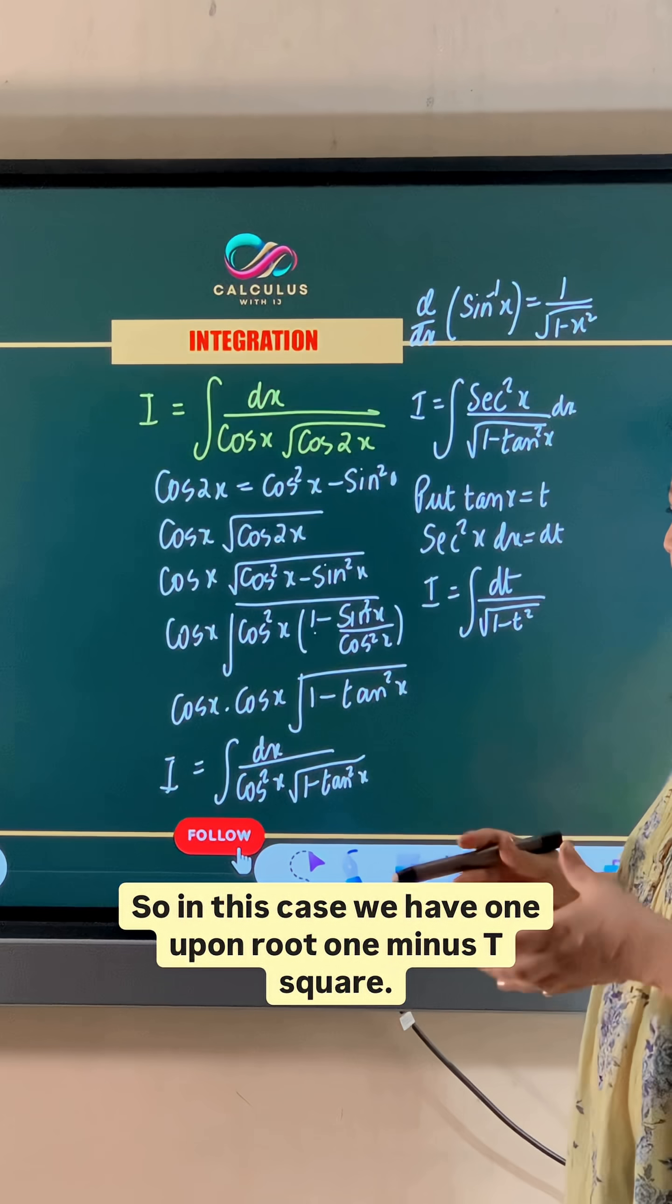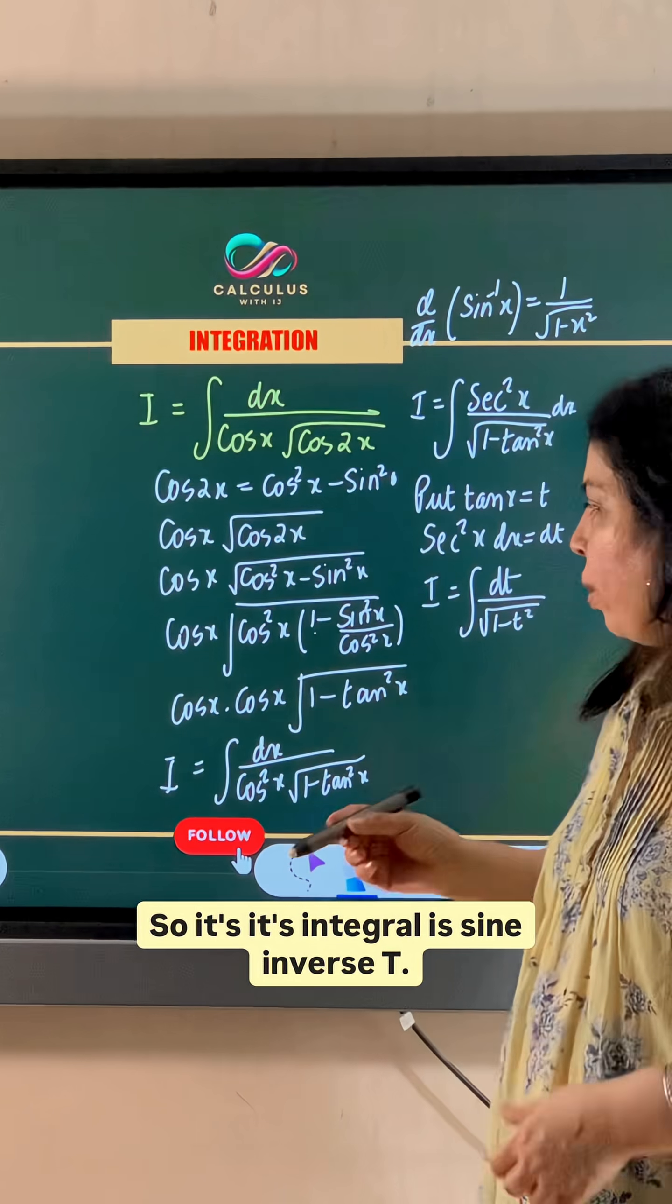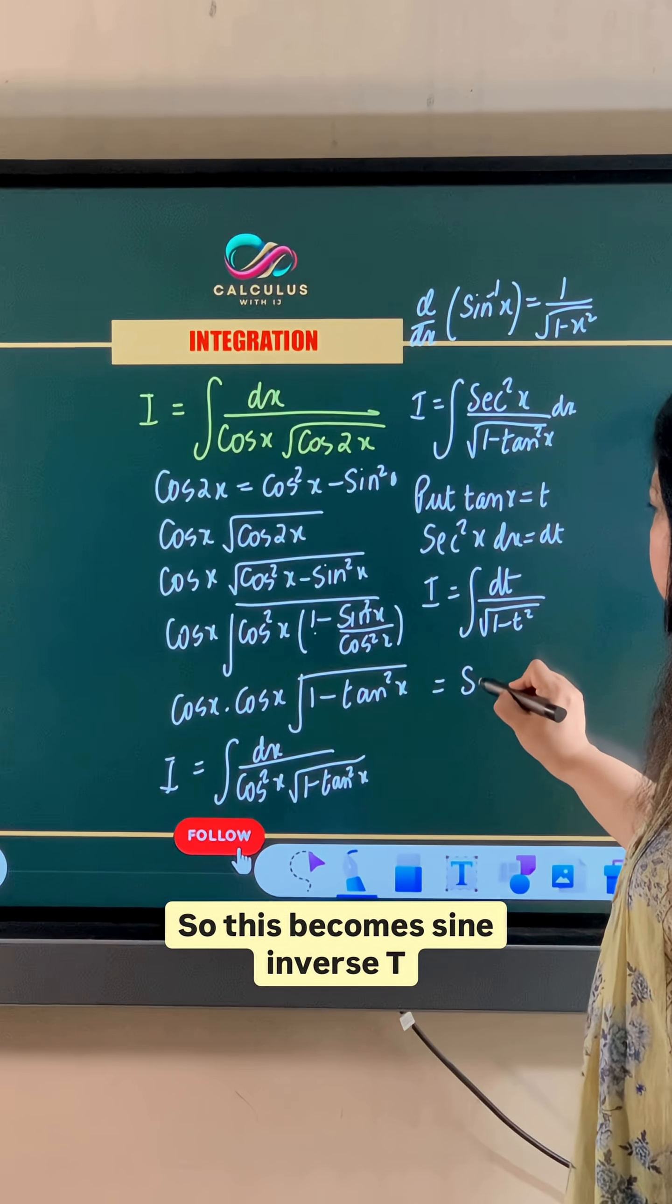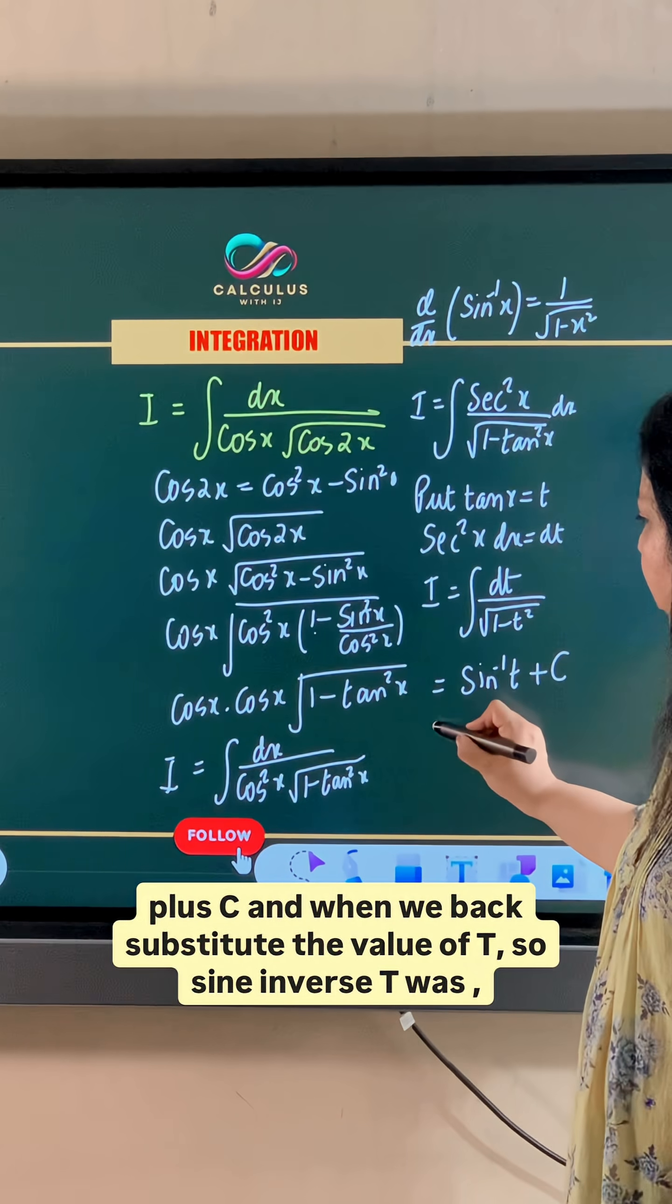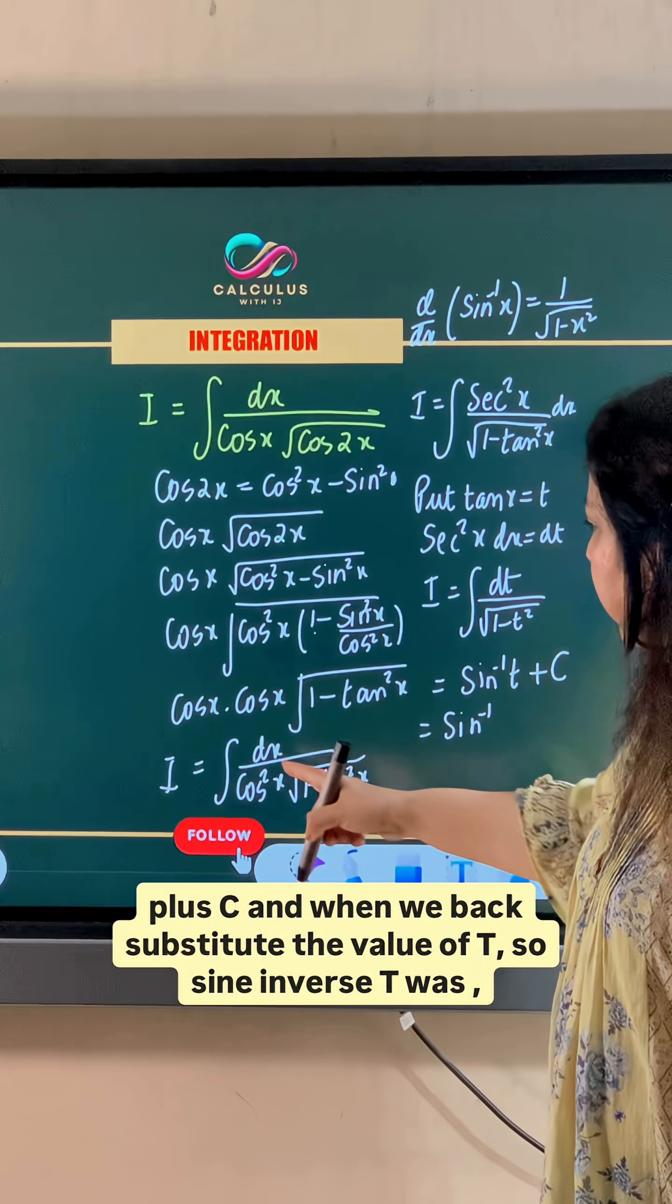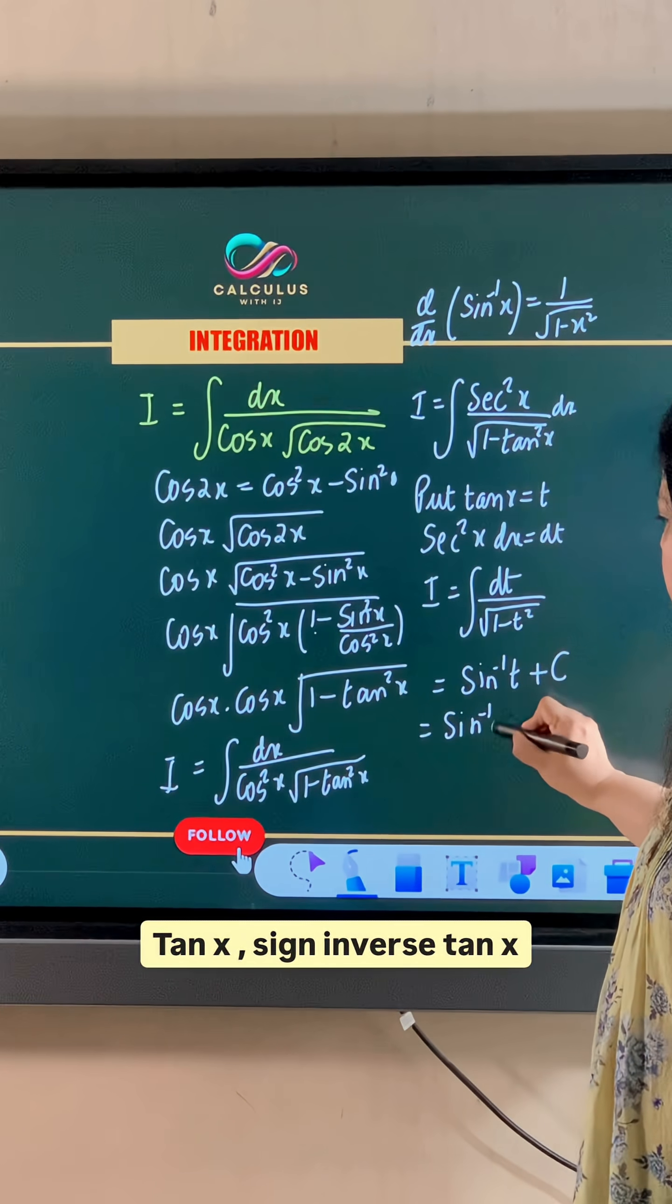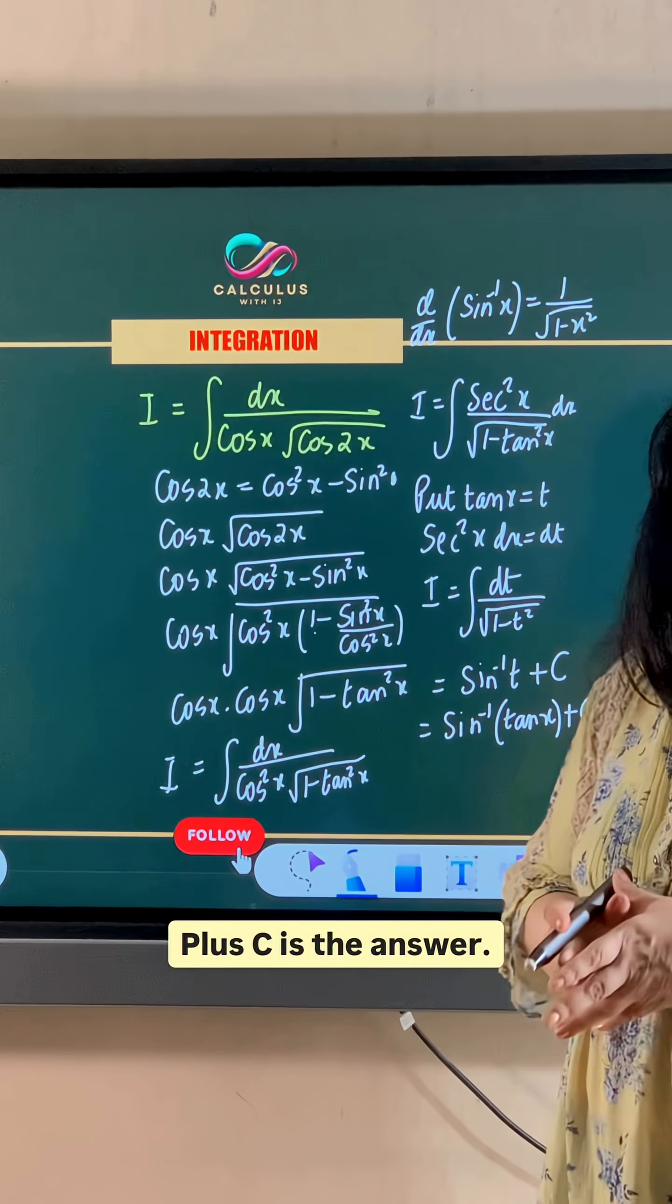So in this case we have 1 upon root 1 minus t square. So its integral is sin inverse t. So this becomes sin inverse t plus c and when we back substitute the value of t, so sin inverse t was tan x, sin inverse tan x plus c is the answer.